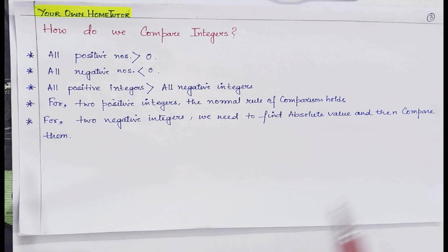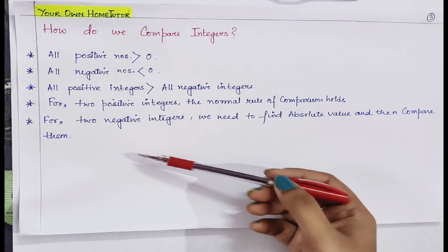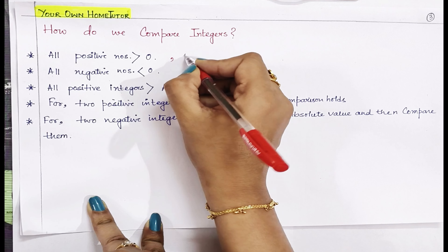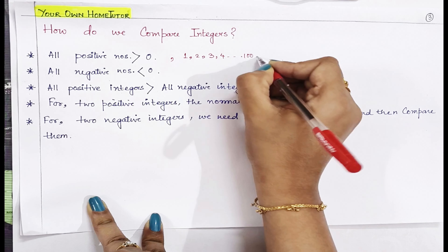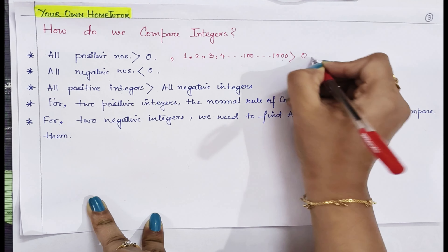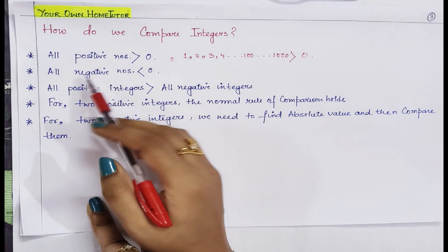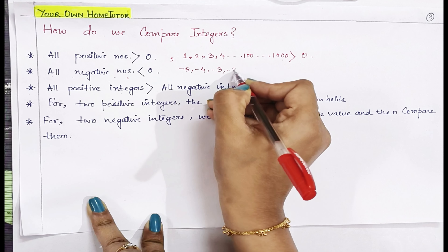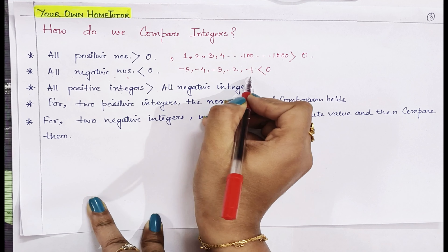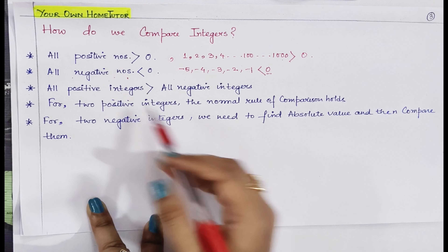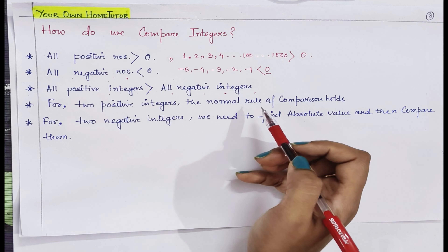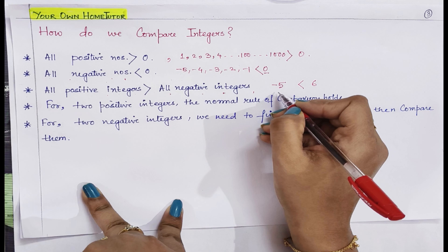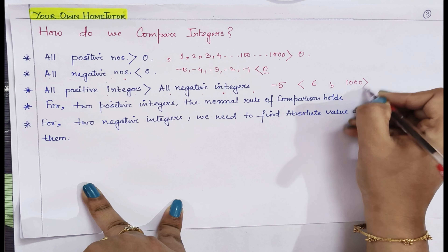Let us learn how to compare integers. First, all positive numbers are greater than 0 — any positive number 1, 2, 3 up to 1000, all will always be greater than 0, and they lie on the right-hand side of the number line. Second, all negative numbers are less than 0 — minus 5, minus 4, minus 3, minus 2, minus 1 are all less than 0, lying on the left-hand side. Third, all positive integers are greater than all negative integers: 6 will always be greater than minus 5, and 1000 will always be greater than minus 1000.